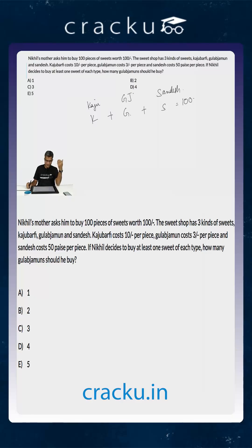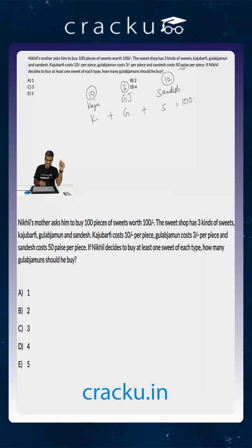We are also told that the price of a Kaju Barfi is 10 rupees, the price of a Gulab Jamun is 3 rupees, and the price of a Sandesh is 50 paise, which is 1 by 2 rupees. So the total money he spent is 10K plus 3G plus S by 2, and this is also equal to 100.